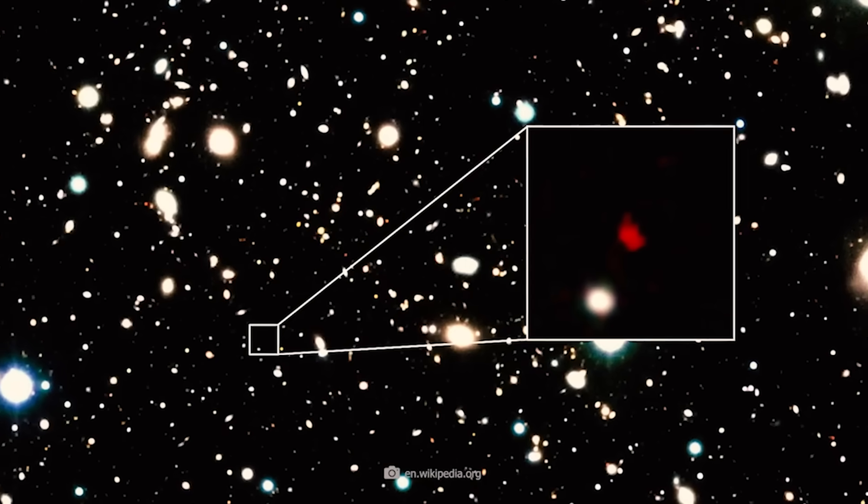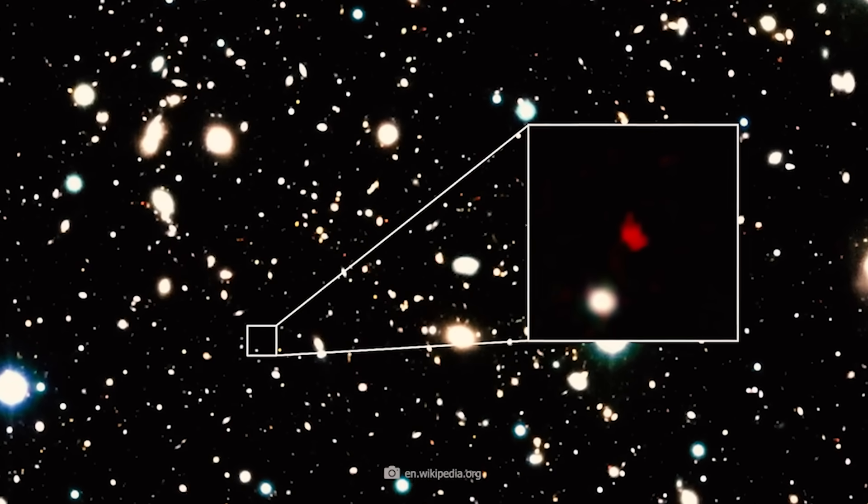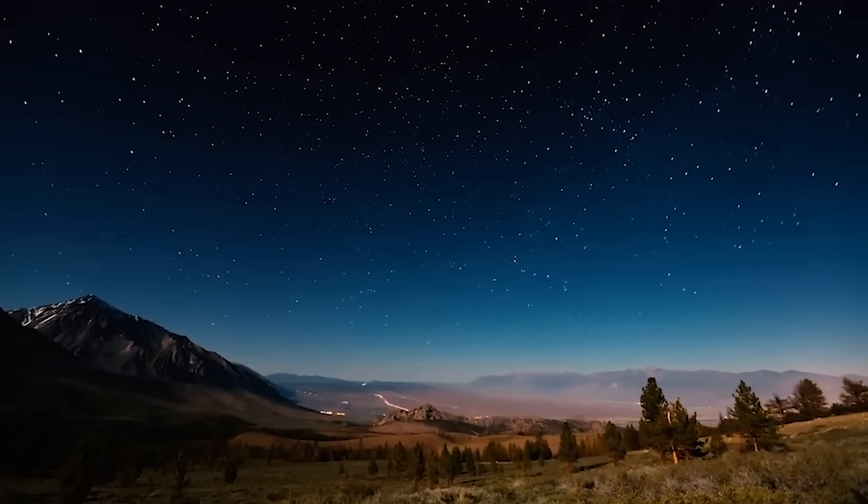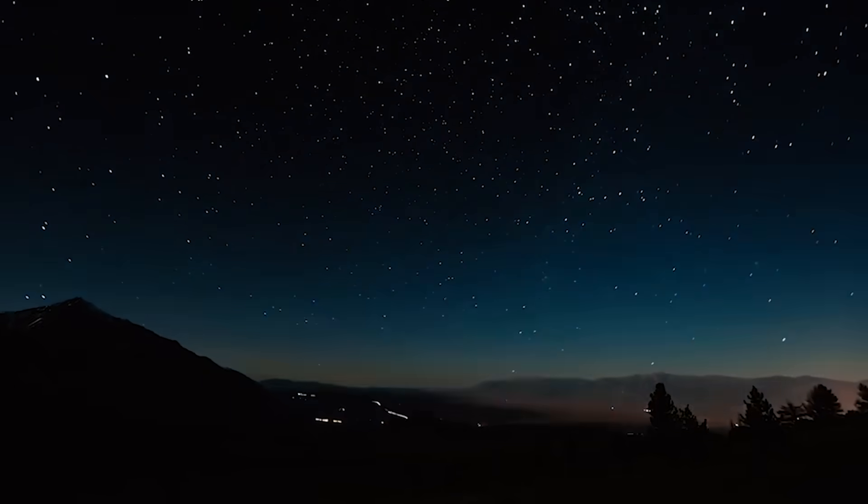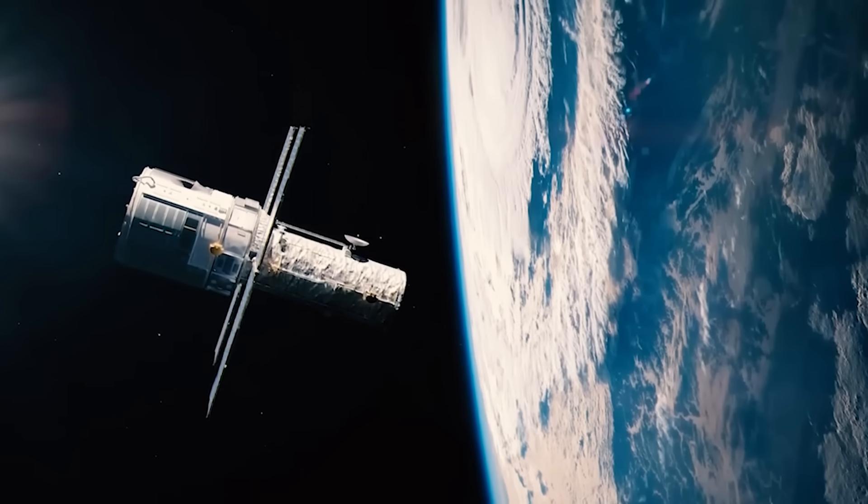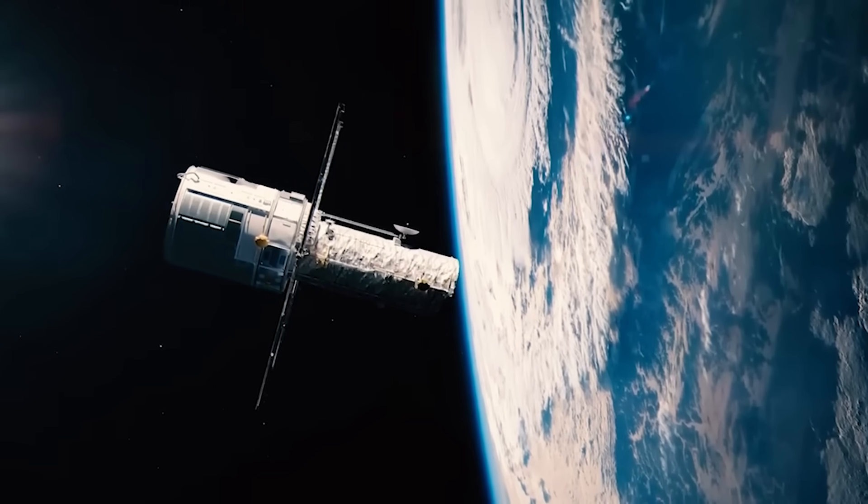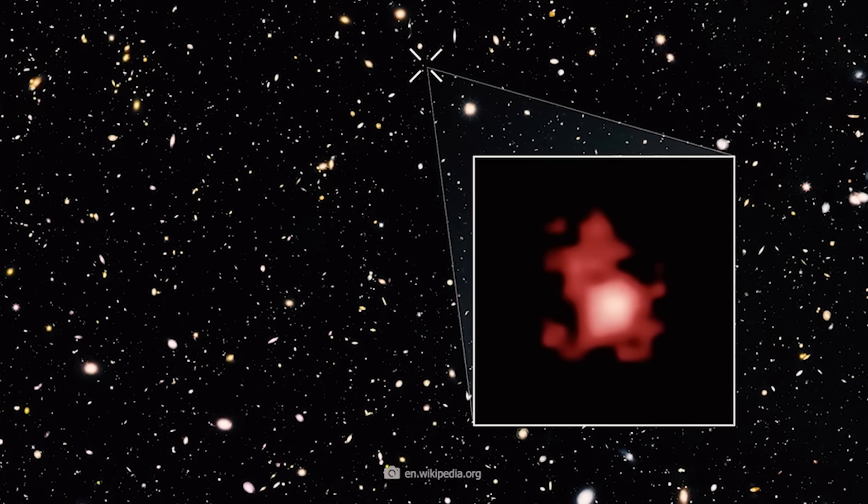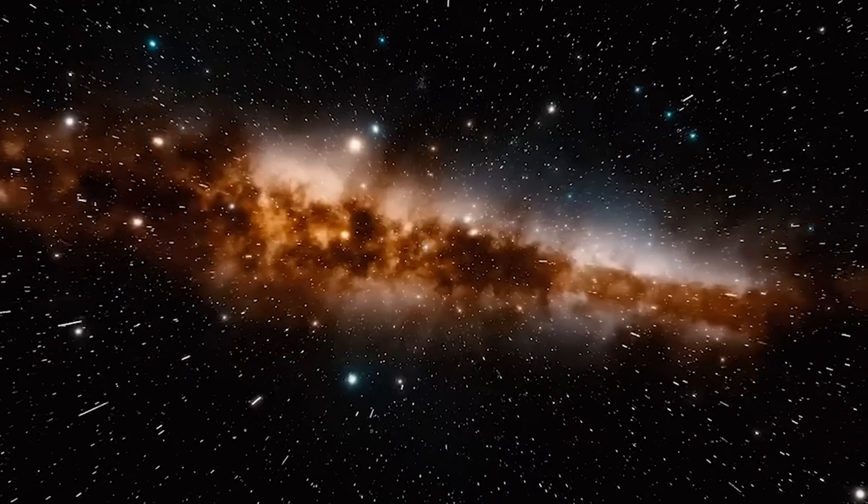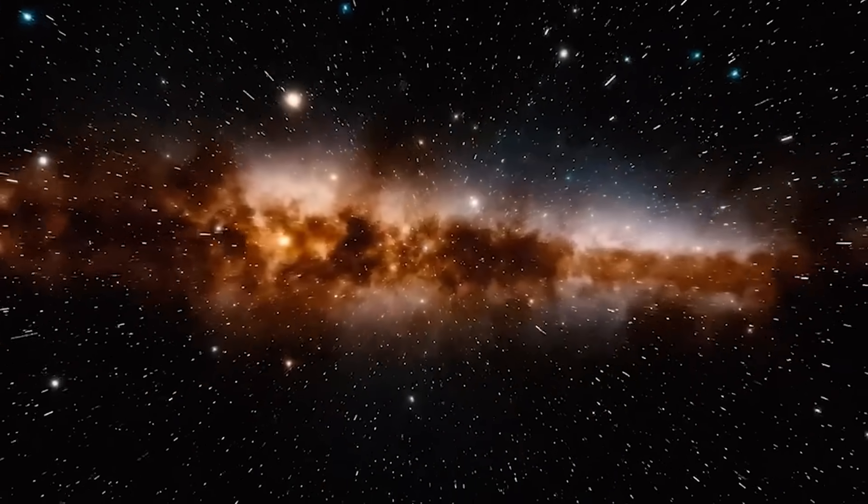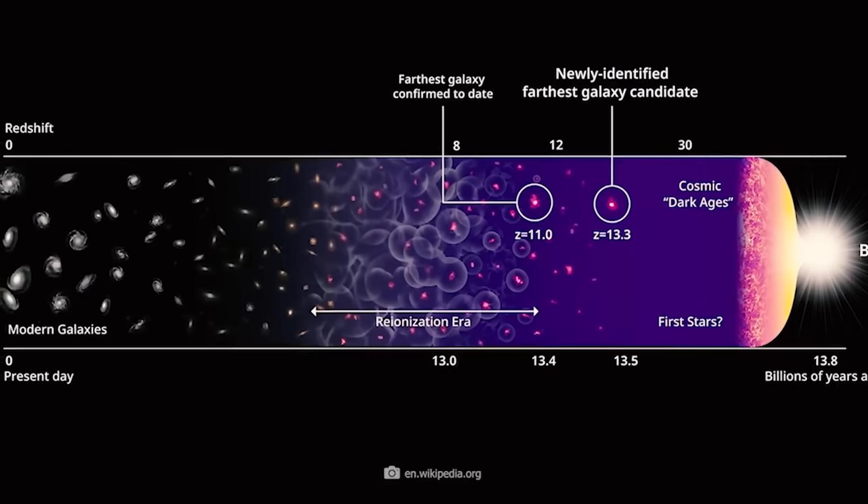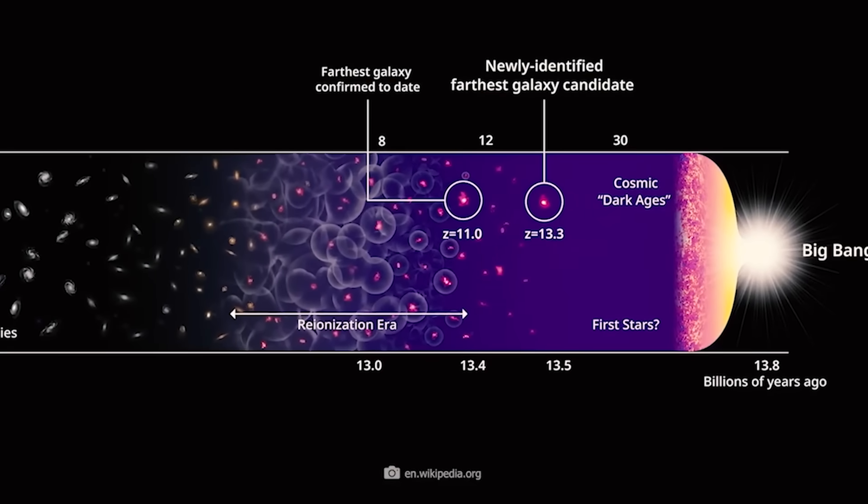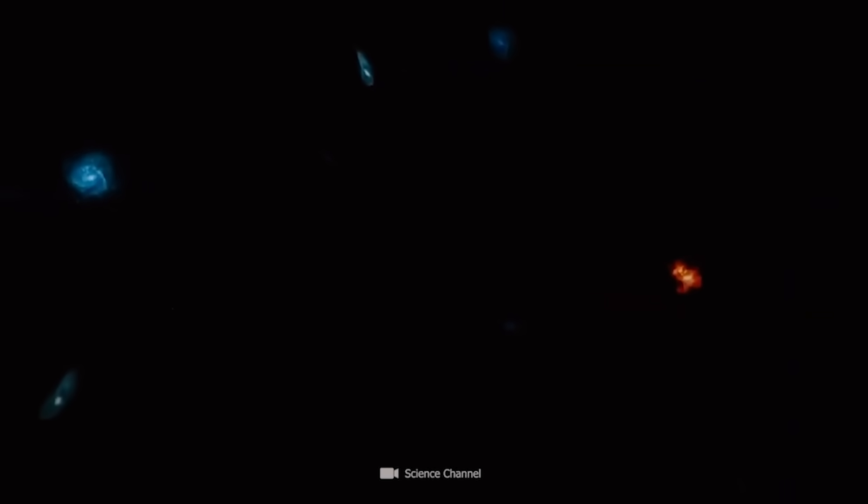What many people are not aware of is that unusually old galaxies have not only been discovered since the new James Webb era. Back in 2016, a research team led by Pascal Osh and Garth Illenworth succeeded in identifying a very old galaxy using the Hubble Space Telescope. With a redshift of Z equals 11.09, the light from GNZ 11 had been traveling for more than 13 billion years before it hit Hubble's observation mirror. This redshift places GNZ 11 as the most distant known galaxy.